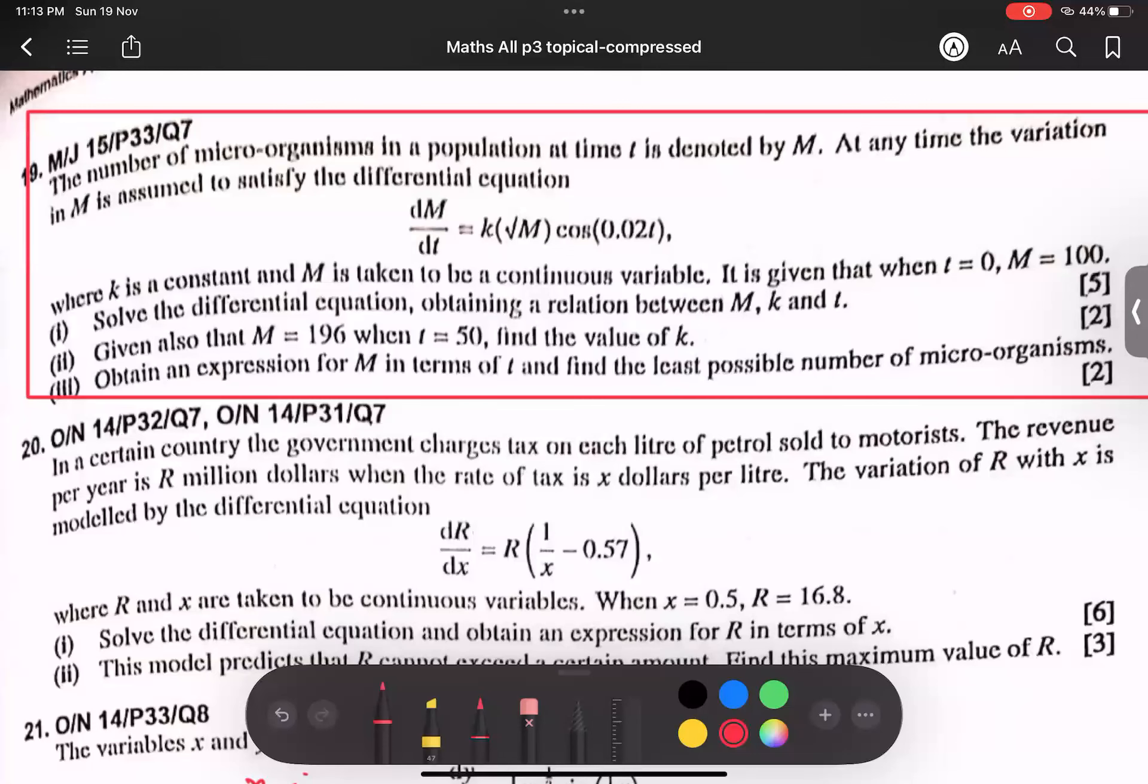This is a June 2015 variant, 33. First question, we have the number of organisms, microorganisms, represented by M. So this M stands for number of organisms, and this relationship is given here.